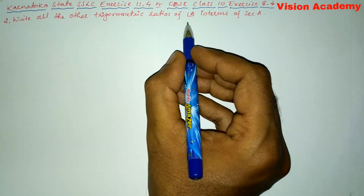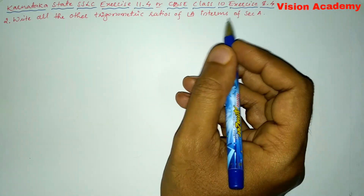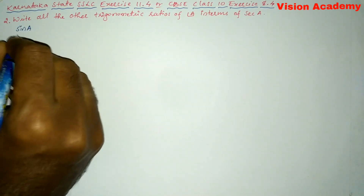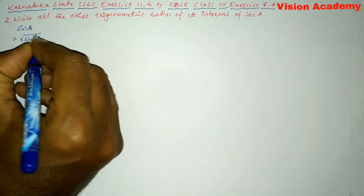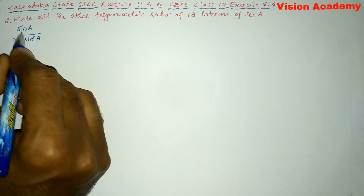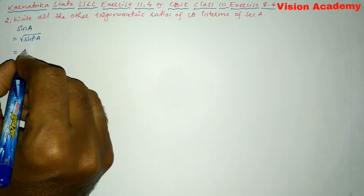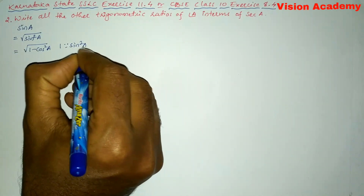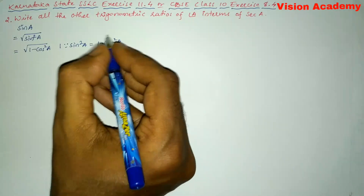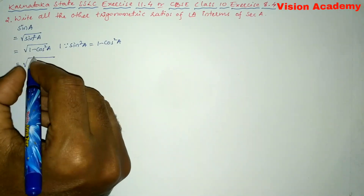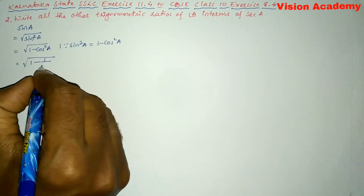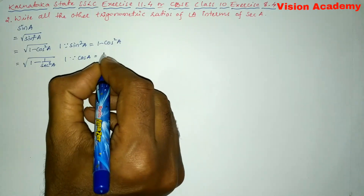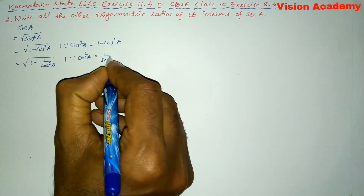All other trigonometric ratios are sine, cos, tan, cosec, and cot. Let us start with sine A. Sine A can also be written as square root of sin²A, because the square and square root will cancel, giving us sine A only. This square root of sin²A can also be written as square root of 1 minus cos²A, since sin²A = 1 - cos²A. And cos²A can be written as 1 by sec²A.